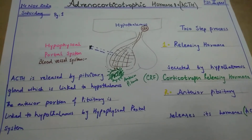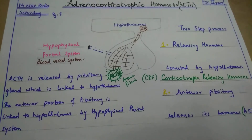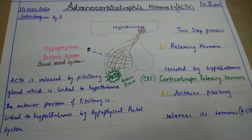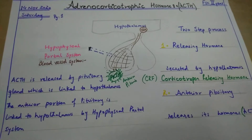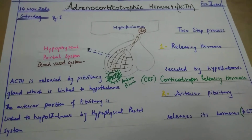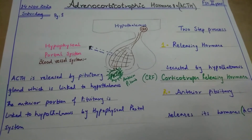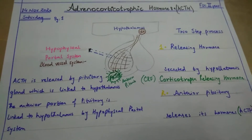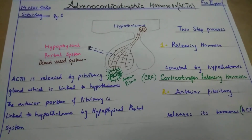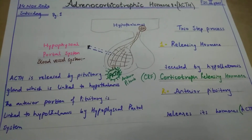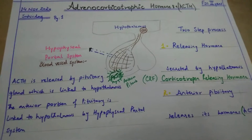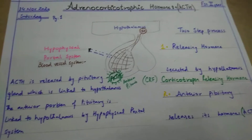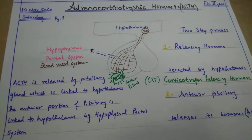In previous lectures, we have studied growth hormone, and we saw which abnormalities arise from hyper secretion and hypo secretion of growth hormone. Similar is the case with the adrenocorticotrophic hormone.